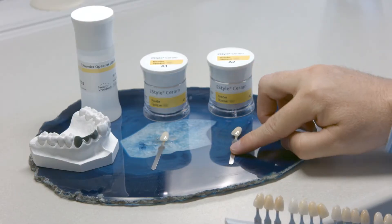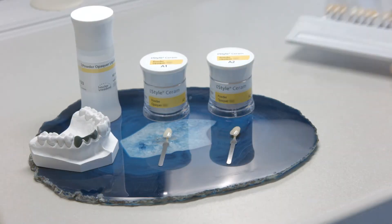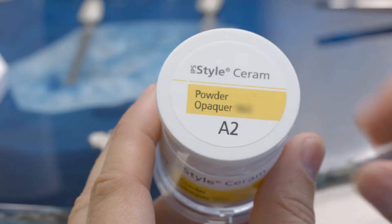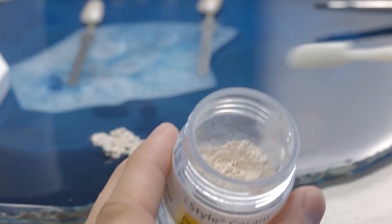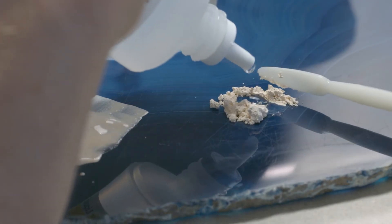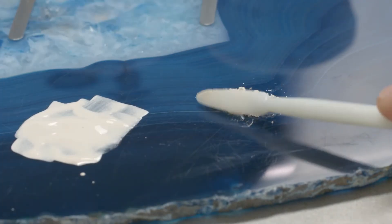Choose the IPS Style Ceram Powder Opaquer that corresponds to the desired tooth shade. Mix the amount of opaquer powder required for the first layer with the IPS Powder Opaquer liquid until you achieve the desired consistency.